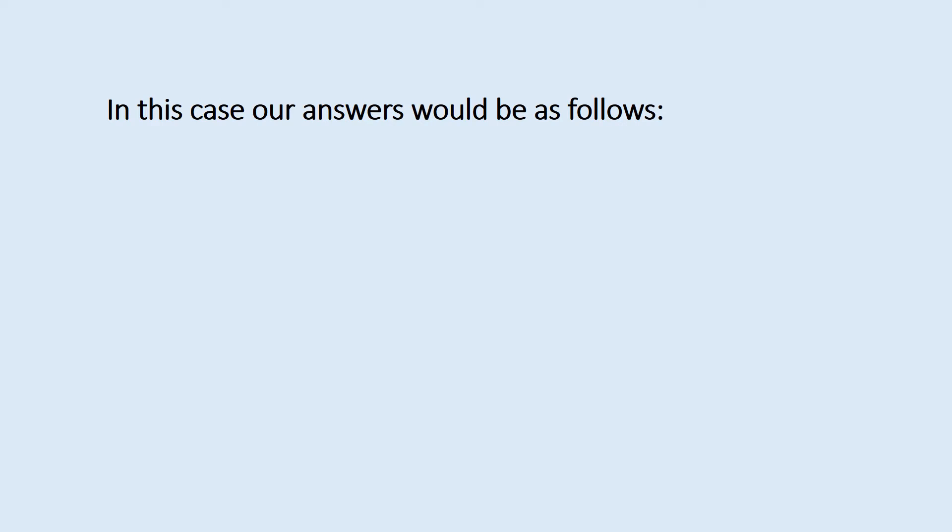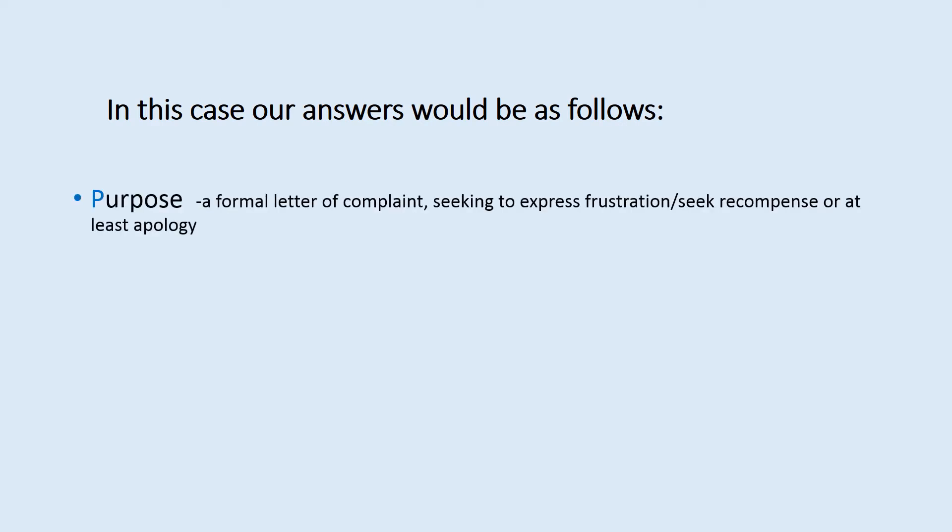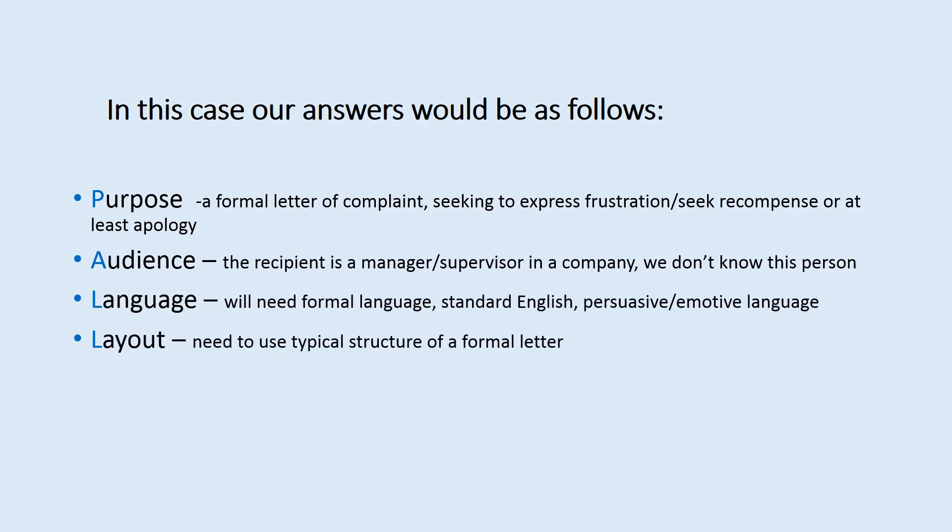For this task involving the complaint letter from Mr Gilbert to National Rail, we are writing a formal letter of complaint — that is our purpose. We're seeking to express our frustration and possibly seeking some form of recompense or compensation, or at least an apology from the company. Our audience is a manager or supervisor in the company — we don't know this person, they're a stranger. In terms of language, we need to use formal language, standard English, and we need to be persuasive and possibly use emotive language to make our arguments engaging and convincing. In terms of layout, there is a typical structure of a formal letter that we need to be using.